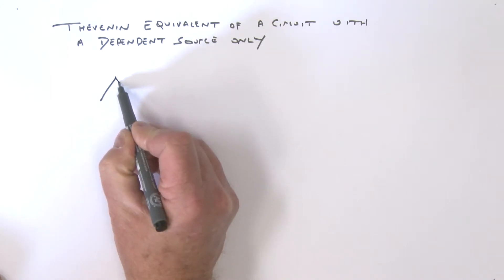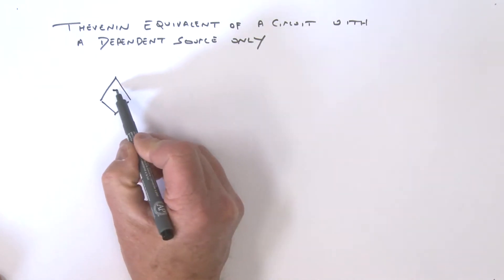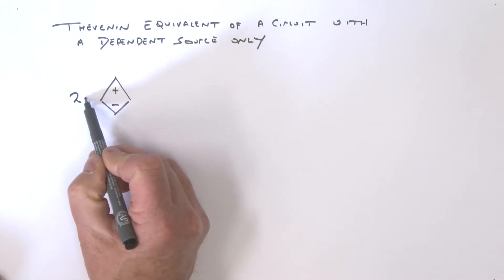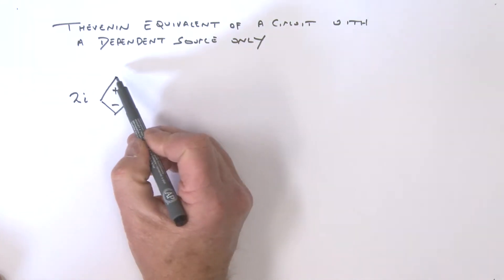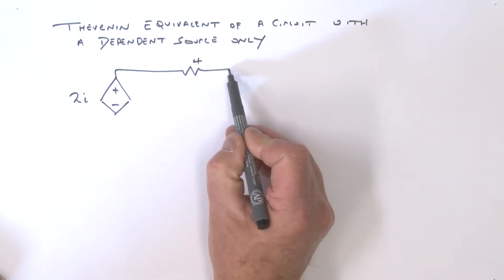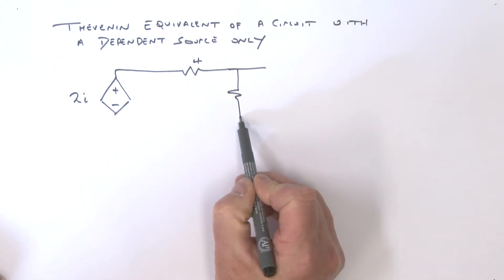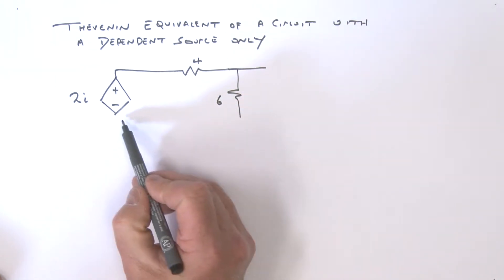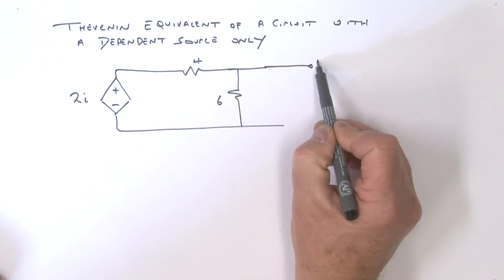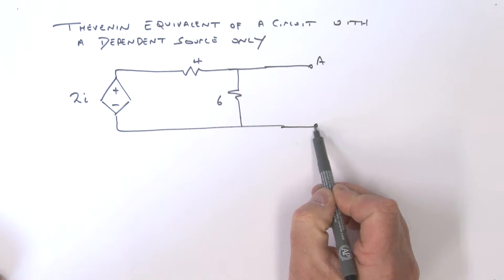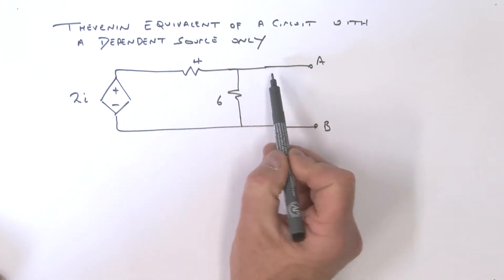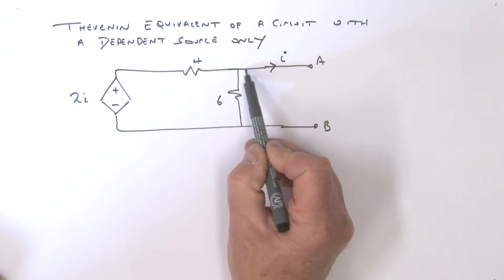Here is my dependent source — we're going to say it's a voltage source with a value of 2 times a current I. We've got a 4-ohm resistor over here and a 6-ohm resistor over here. I'm going to call these terminals A and B, and the current I is defined here in this direction.